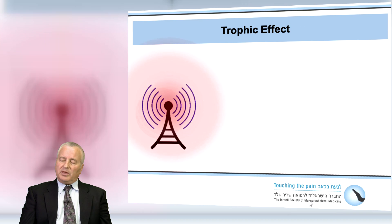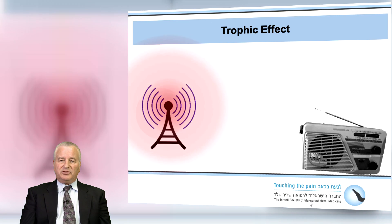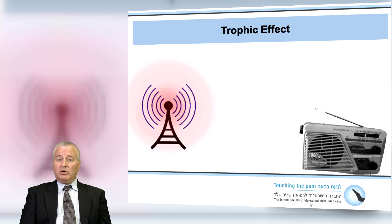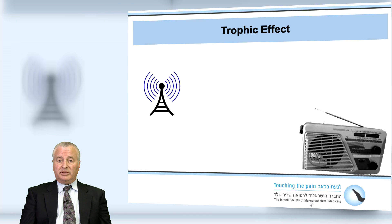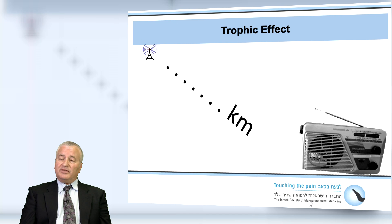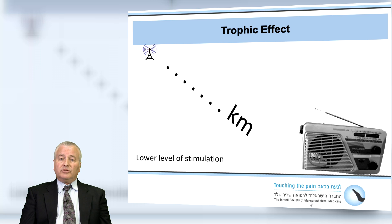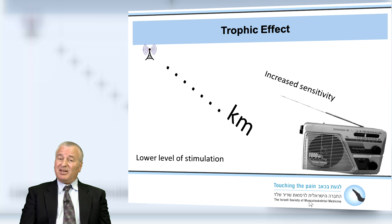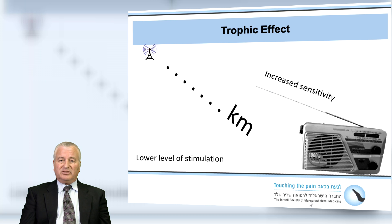If we have a radio station in a city providing a radio signal, we don't need a very sophisticated instrument to listen to the music. However, if we go out to the periphery, somewhere out in the desert, and the signal is far weaker, we need to increase the sensitivity of our radio to pick up that signal. This is exactly what the muscle does when it's deprived of its excitatory input, its trophic input by the nerve.